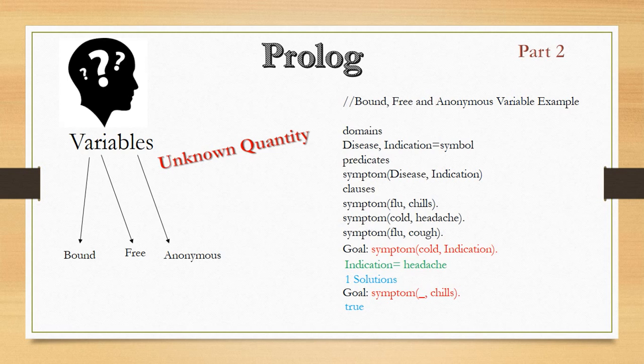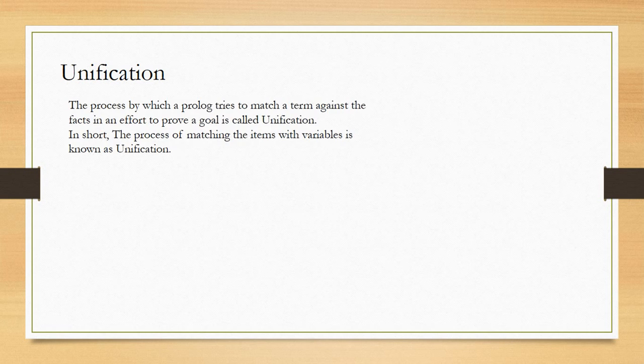Now let's move on to the unification process. The unification process is essentially pattern matching — whatever is written in the predicates is checked against your goal. The relation name is checked, the arguments are checked, the number of arguments is checked, and the type of arguments — everything is verified. The process by which Prolog tries to match a term against a fact in order to prove a goal is called unification. In short, the process of matching items with a variable is pattern matching.